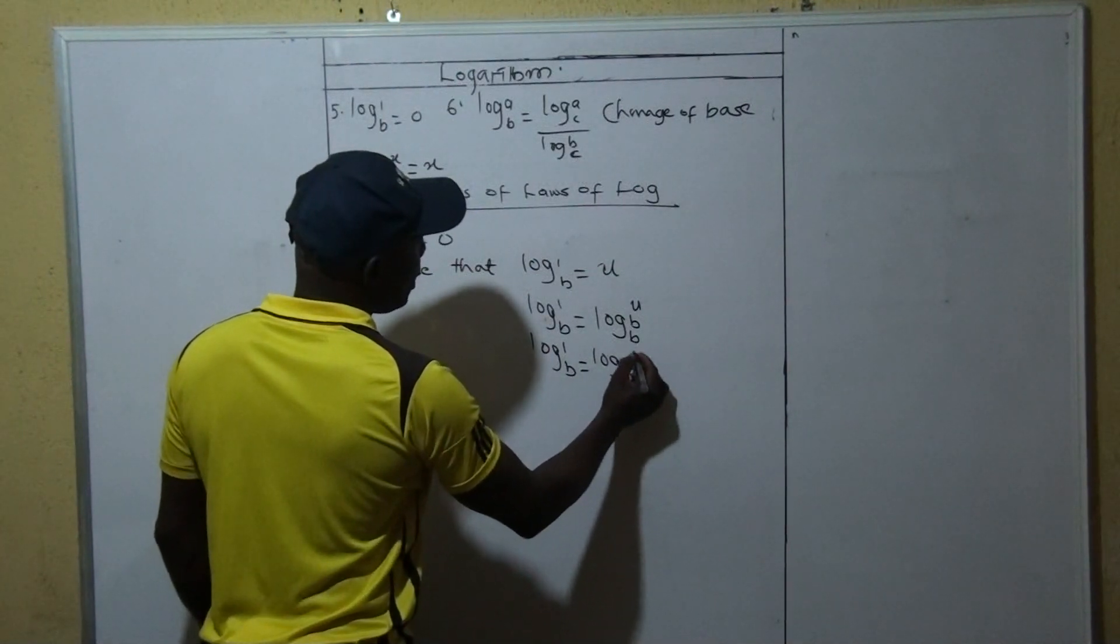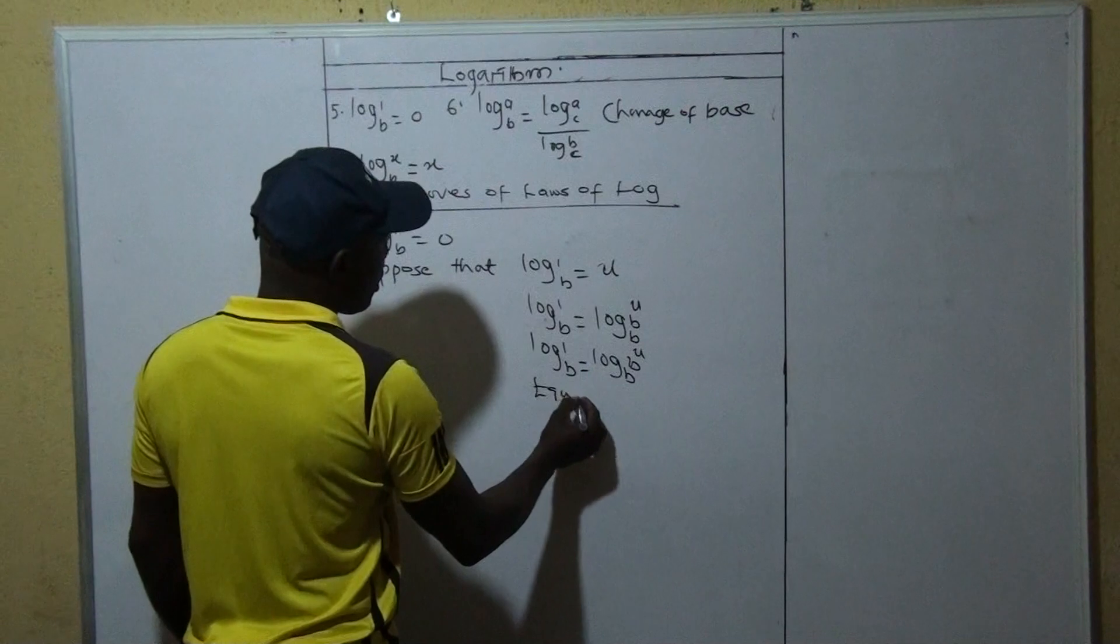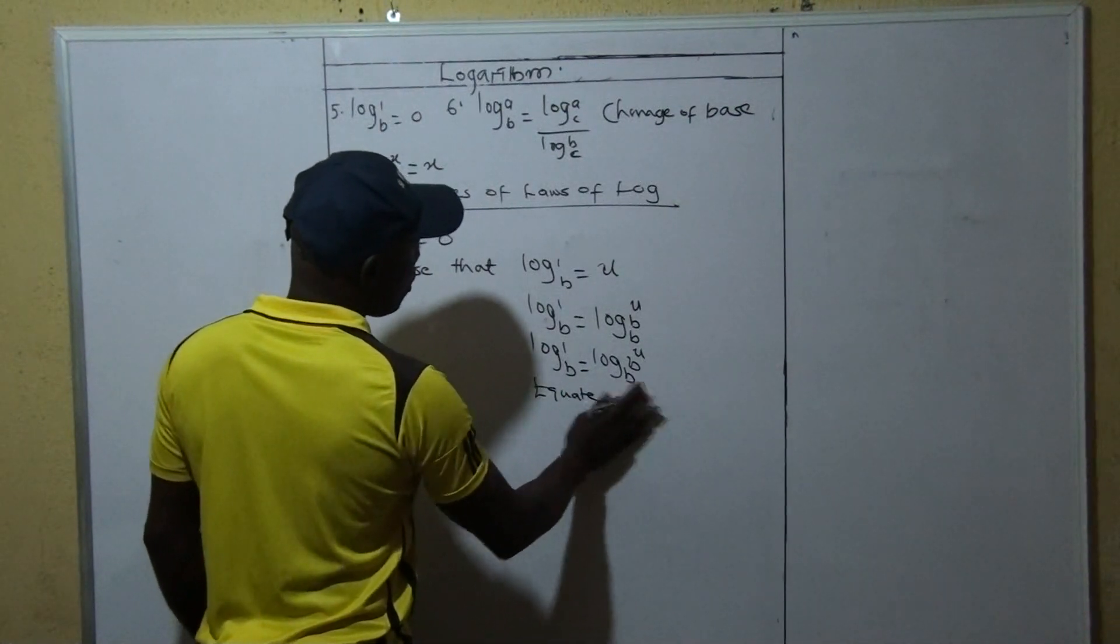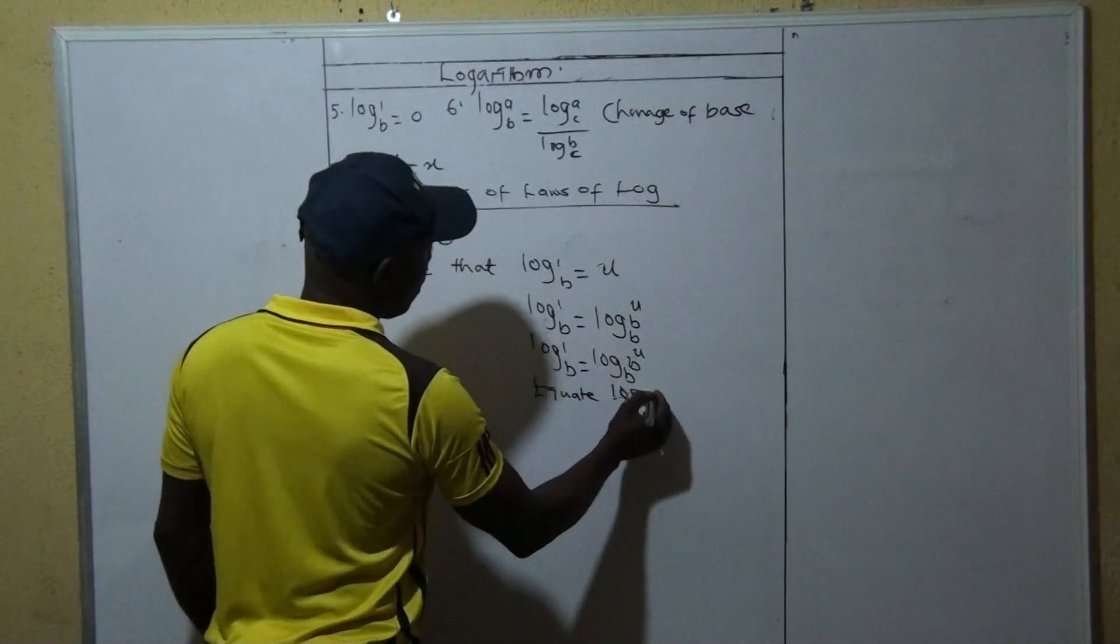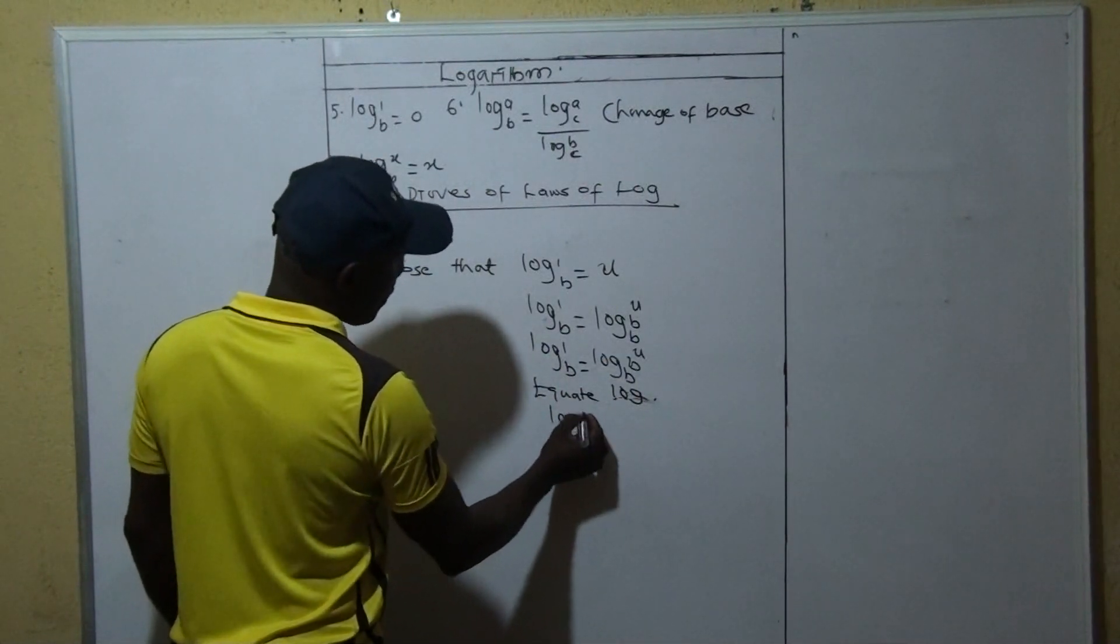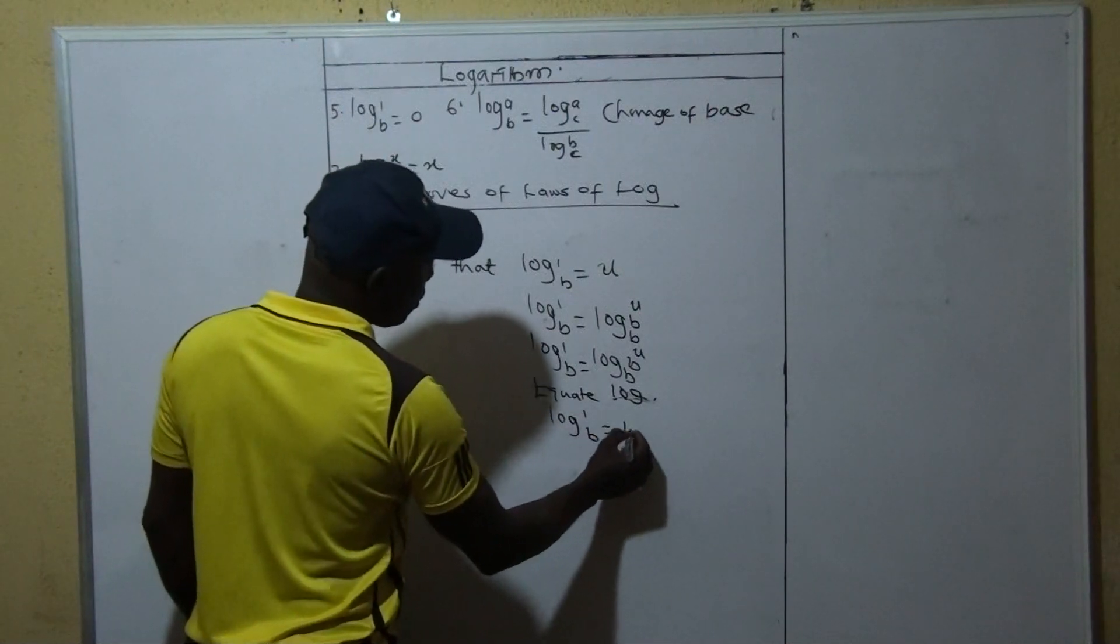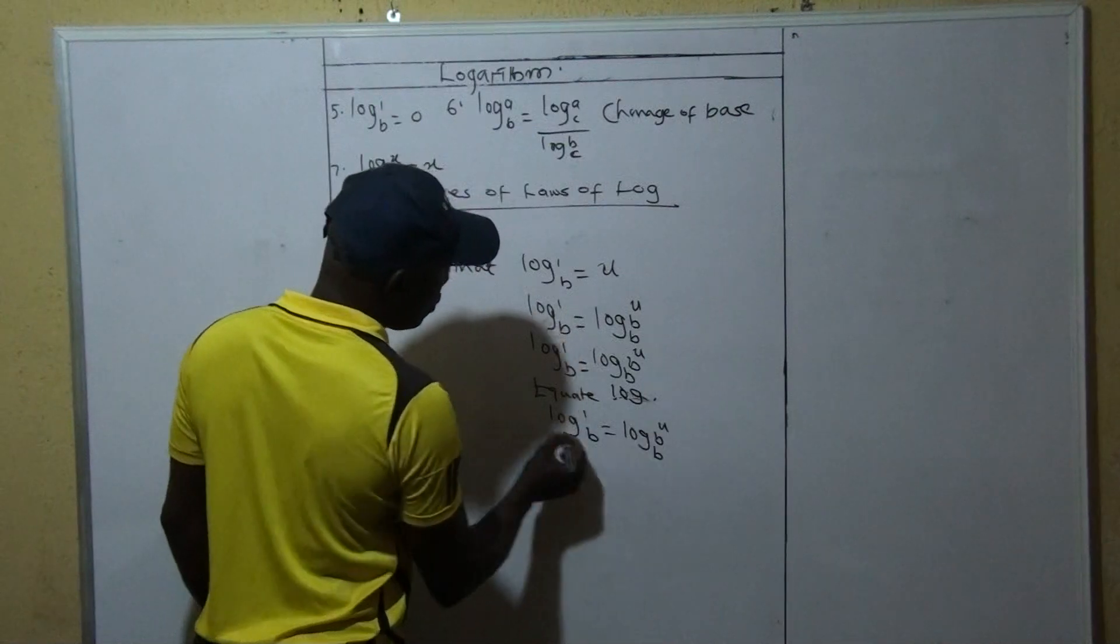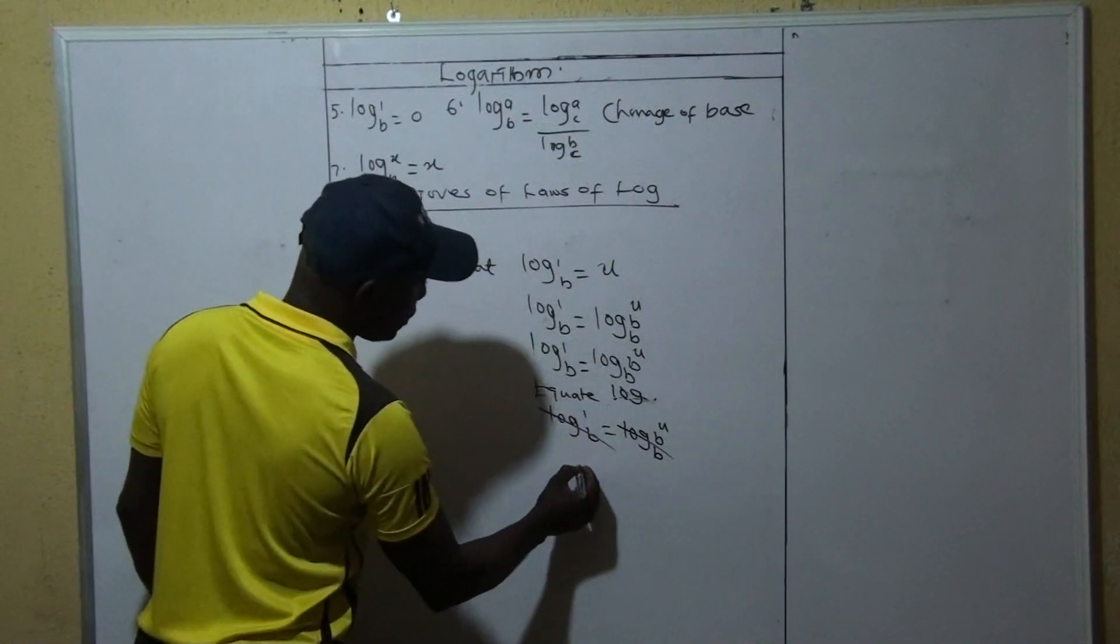Very sorry, this is log B to base B raised to U. I equate with log, so when I tell you equate log, it simply means log 1 to base B is equal to log B to base B raised to U, so that this one will go with this, so that you see that here we have 1 is equal to B raise to power U.